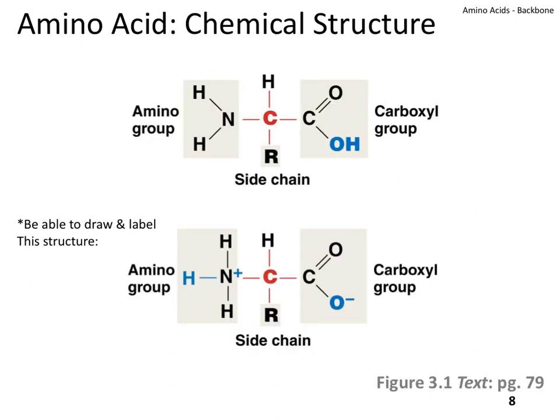Now we're going to look at the chemical structures drawn out, including all the atoms within each functional group. You should know it drawn out like this: the amino group has NH2, shaded here as one functional group. We see our central carbon, we see the R group or side chain, and then the carboxyl group shaded as another functional group. This is a very reasonable way to draw an amino acid.